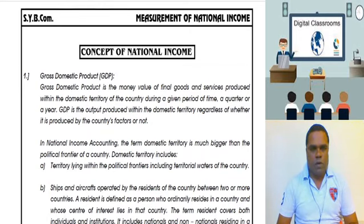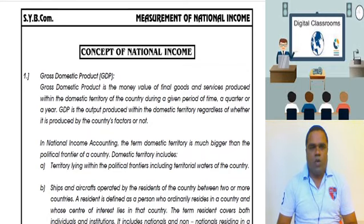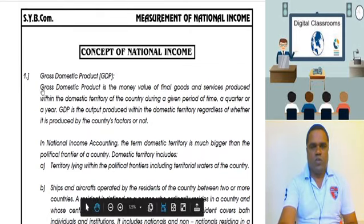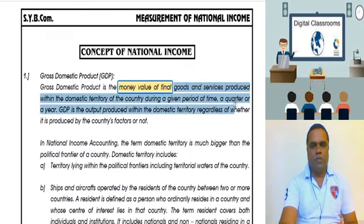For the first concept, Gross Domestic Product, there are two or three words to understand. 'Product' stands for all the goods and services produced in a country. 'Domestic' refers to production taking place within our country. 'Gross' means we are not deducting depreciation — it is inclusive of depreciation. So, GDP is defined as the money value of all the final goods and services produced within the territory of a country during a given period of time.